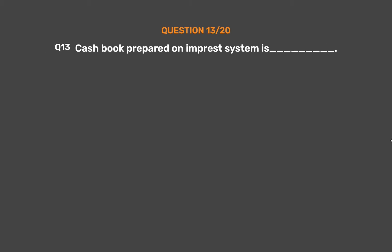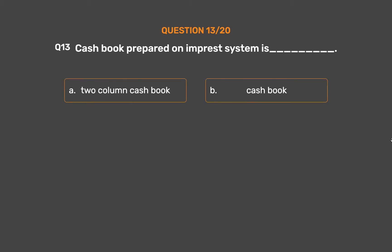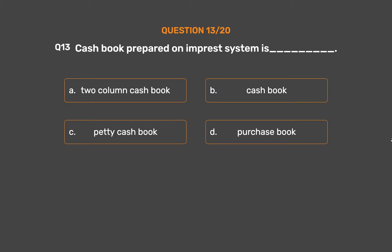Question number thirteen: a cash book prepared on the imprest system is — Option A: two-column cash book. Option B: cash book. Option C: petty cash book. Option D: purchase book.